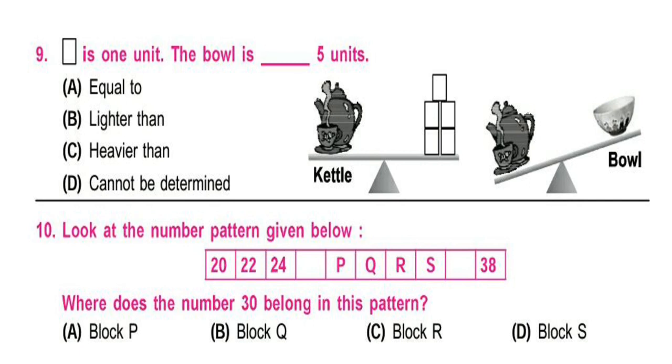Question 9. Square is 1 unit. The bowl is ____ 5 units. A. Equal to B. Lighter than C. Heavier than D. Cannot be determined.